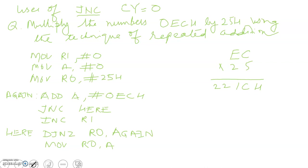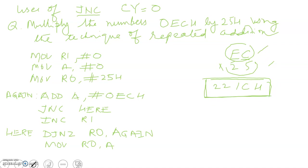EC needs to be multiplied by 25, and the result should be a 16-bit number from two 8-bit operands. One thing is clear: if we are not using the ADDC instruction, then we have to store the carry somewhere so that we get the higher 8 bits of the product.